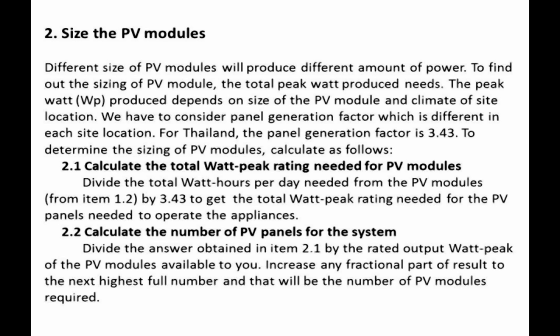Step 2: Size the PV modules. Different sizes of PV modules will produce different amounts of power. To find the sizing of PV modules, the total peak watts (Wp) produced must be determined. Peak watts depend on the size of the PV module and the climate of the site location. We must consider the panel generation factor, which is different for each site location. For Thailand, the panel generation factor is 3.43. Step 2.1: Calculate the total watt-peak rating needed for PV modules by dividing the total watt-hours per day needed from the PV modules (from Step 1.2) by 3.43 to get the total watt-peak rating needed.